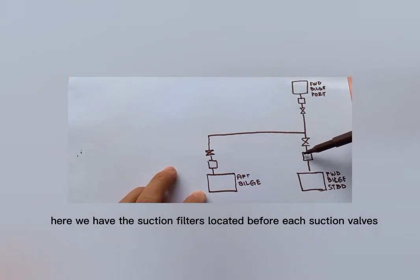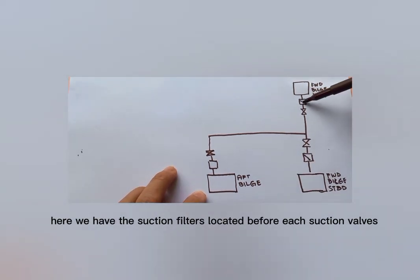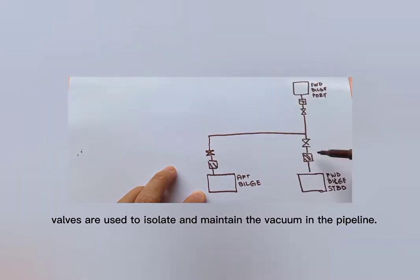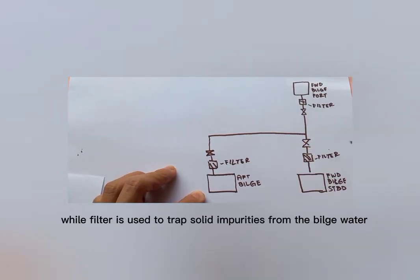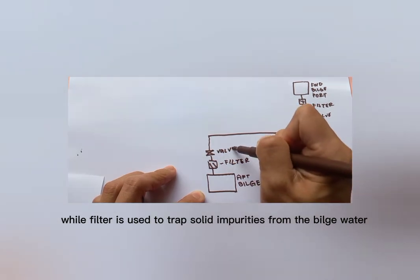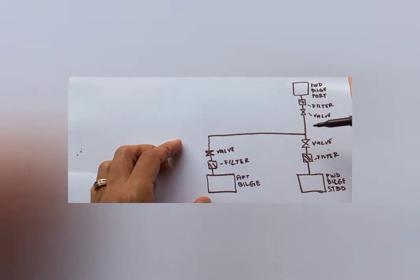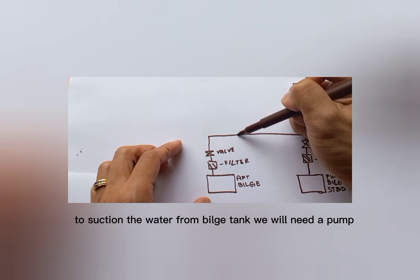Here we have the suction filters located before each suction valve. Valves are used to isolate and maintain the vacuum in the pipeline, while filters are used to trap solid impurities from the bulge water.